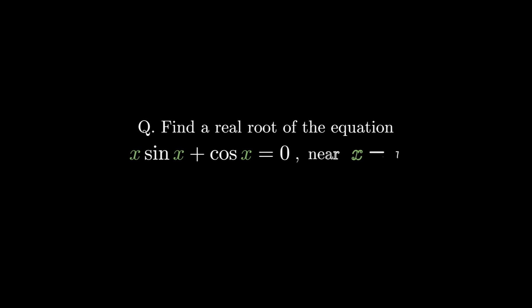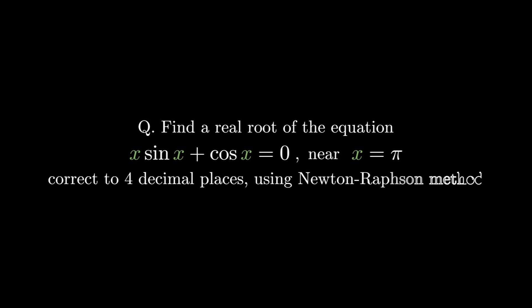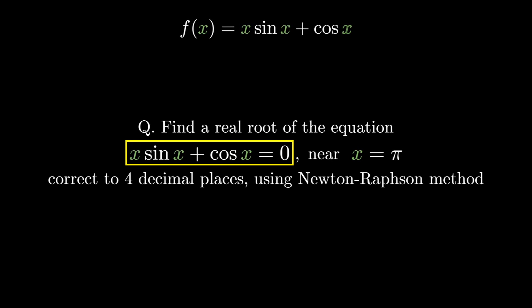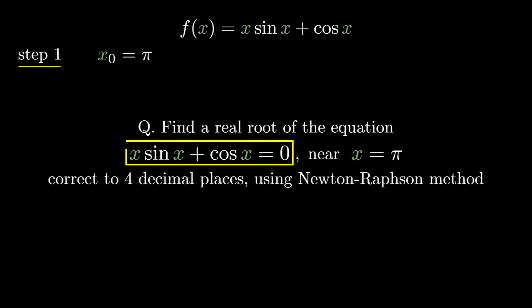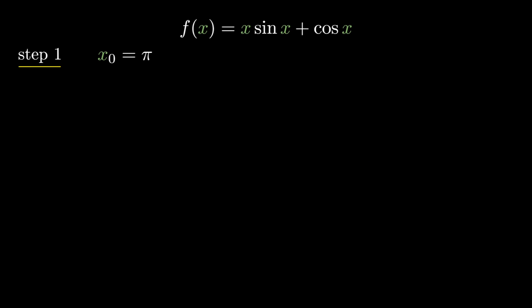Let's follow our first example. Find a real root of the equation x·sin(x) + cos(x) = 0 near x = π, correct to four decimal places using Newton-Raphson method. We have f(x) = x·sin(x) + cos(x). As given in the question, let's take first guess x₀ as π. We have to find the root value correct to four decimal places using Newton-Raphson formula.